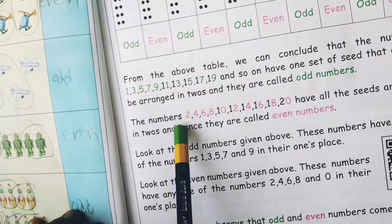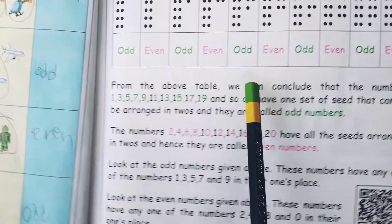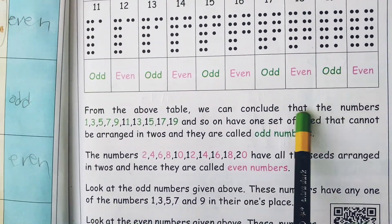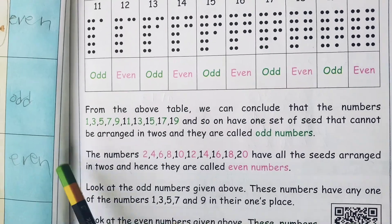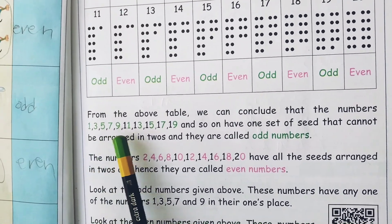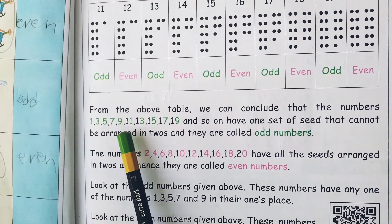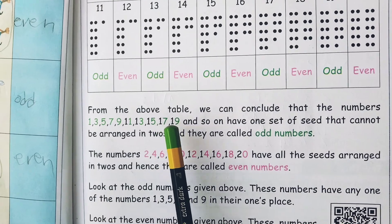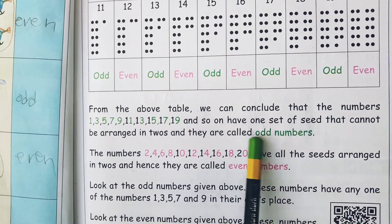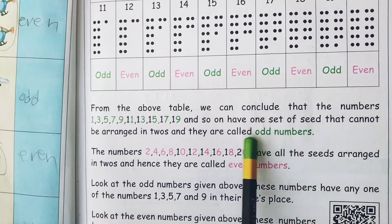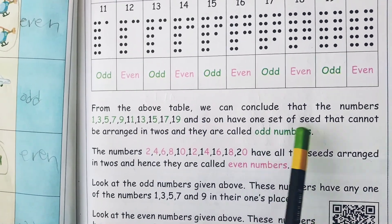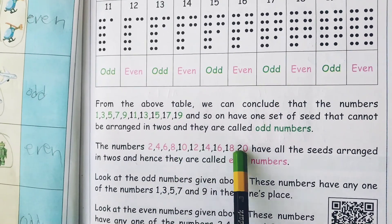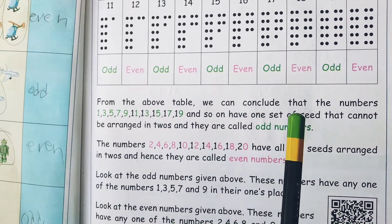From the above table we can conclude that the numbers 1, 3, 5, 7, 9, 11, 13, 15, 17, 19 and so on have one seed that cannot be arranged in twos and they are called odd numbers.